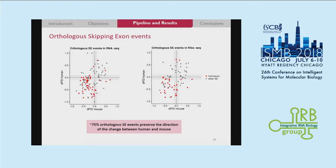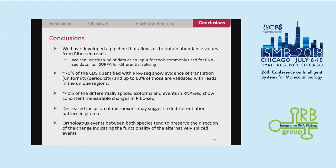In conclusion, in this work we have developed a pipeline that allows us to obtain abundance values from ribo-seq reads, so this data can be used as input for tools commonly used for RNA-seq, as shown for SUPPA for differential splicing. We have also defined that 70% of CDSs quantified with RNA show evidence of translation, and up to 60% of those can be validated with reads in unique regions. Also, 40% of differentially spliced isoforms and events in RNA-seq show a consistent measurable change in ribo-seq. We have also observed decreased inclusion of microexons in glioma suggesting a differentiation pattern. Finally, orthologous events between both species tend to preserve the direction of the change, indicating the functionality of these alternatively spliced events.